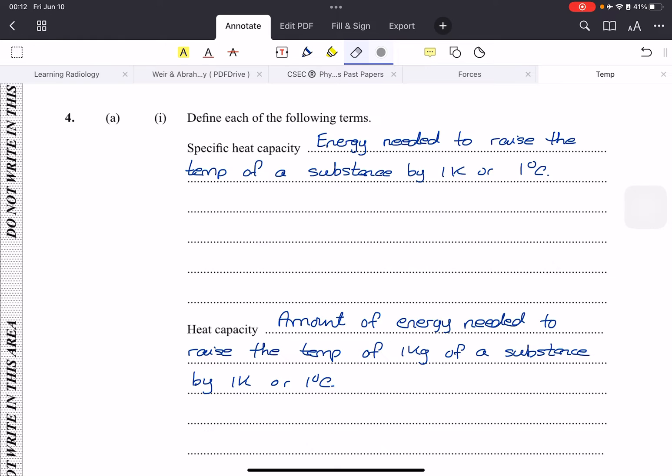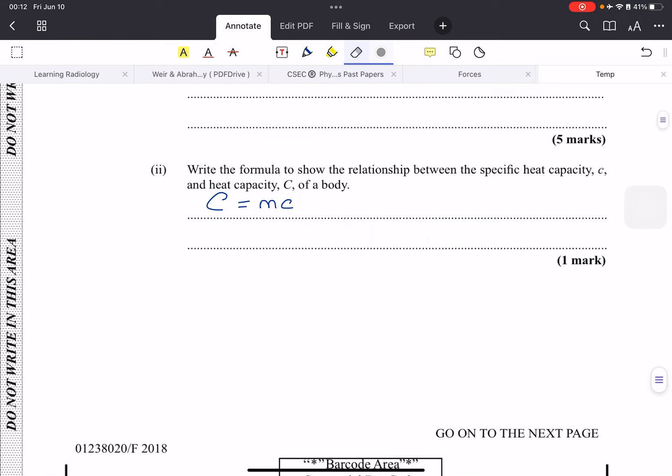The definitions are laid out here for you, and there's a formula that relates the heat capacity to the specific heat capacity. Because heat capacity deals with mass, to calculate your specific heat capacity from your heat capacity, you just multiply the specific capacity, which is small c, by the mass, and that will equal heat capacity.